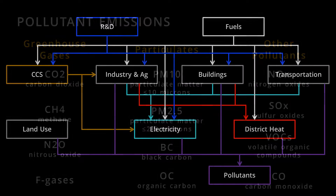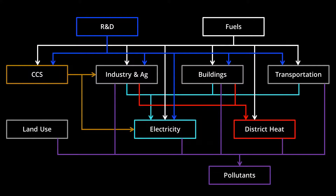All of these are primary pollutants, which means they are emitted directly. The EPS does not track secondary pollutants, such as ozone, which are formed by chemical reactions in the atmosphere. Outputs from the EPS can be used as inputs to a gridded air quality model, such as CMAQ or Geoschem, to predict how policy will affect air quality.